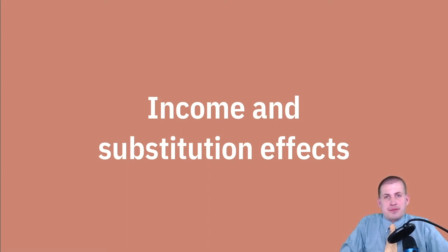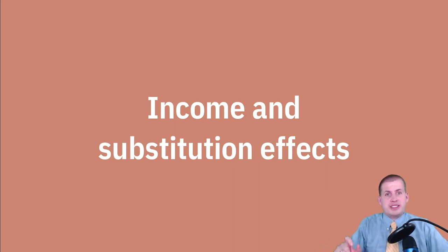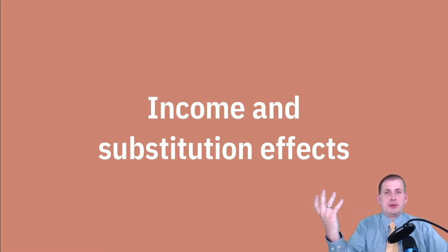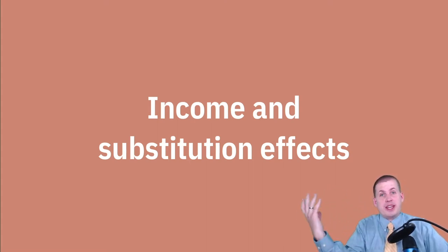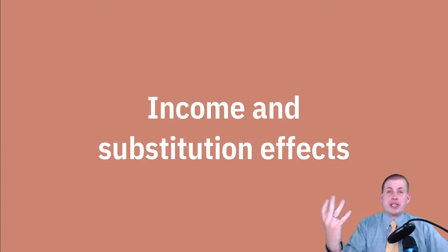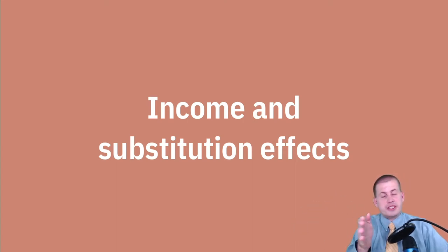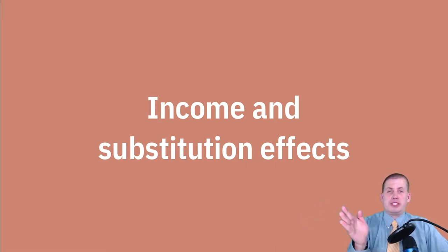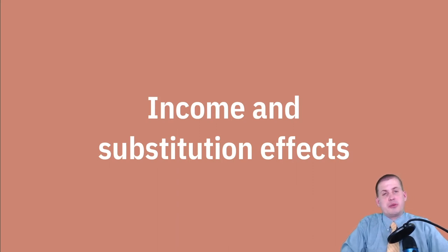The stuff we're going to talk about now you can theoretically do math for — you can figure out the exact income and substitution effects, and in other classes, like an actual economics class, you have to calculate this stuff. I don't care about the exact effects. In your problem set it'll ask you about the income and substitution effects, but it's mostly going to be graphical — drawing lines and points — so don't worry so much about the math here.